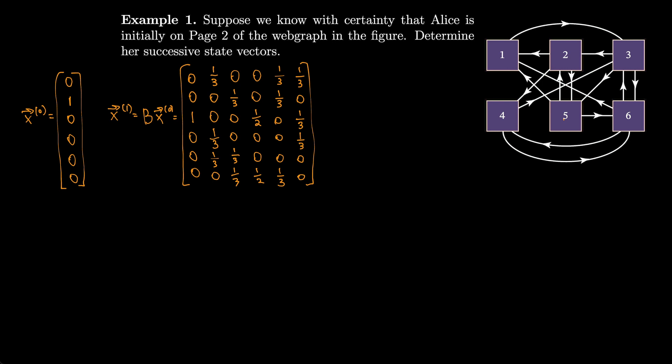So we'll take that and multiply it by x0, which we said was 0, 1, 0, 0, 0, 0, and we end up with one-third, 0, 0, one-third, one-third, 0. We could approximate that by 0.3333, 0, 0, 0.3333, 0.3333, 0.